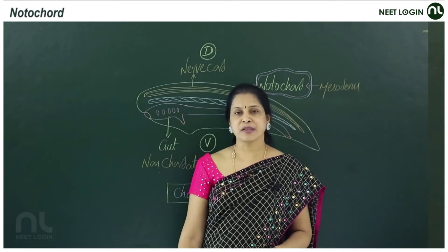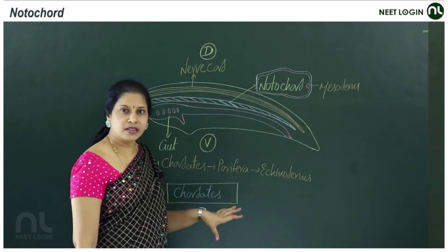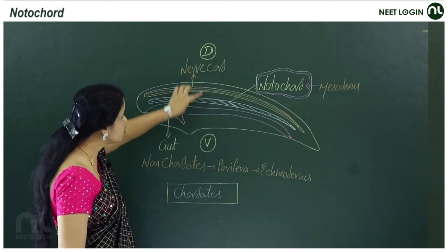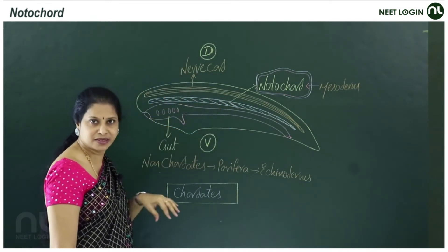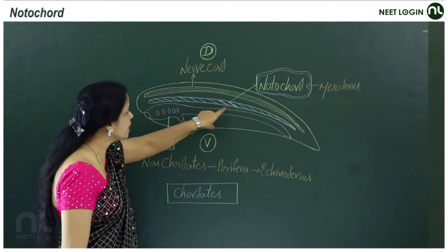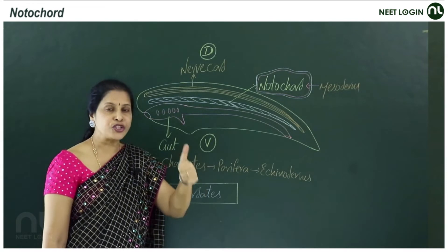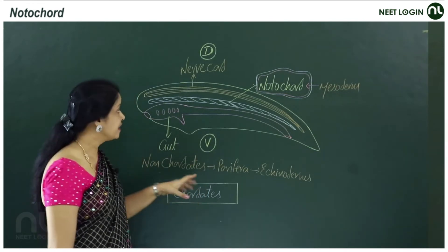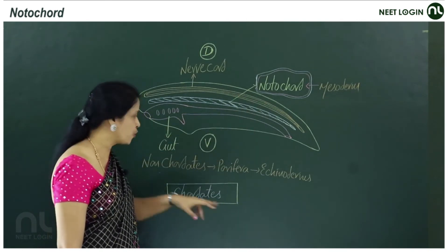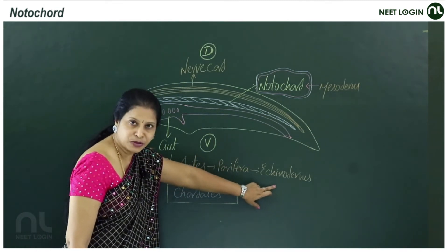Notochord — another fundamental feature helpful in the classification of animals. The notochord is a mesodermally derived rod-like structure present on the dorsal side of some animals. During embryonic development, this rod-like structure develops on the dorsal side and gives support to the organism. Animals with a notochord are referred to as chordates.